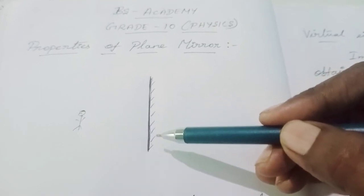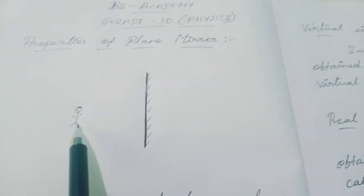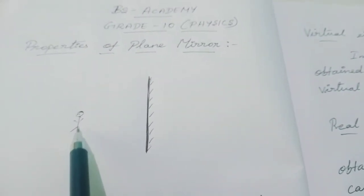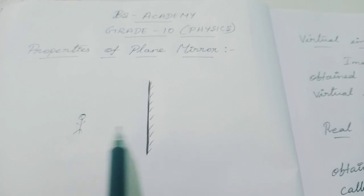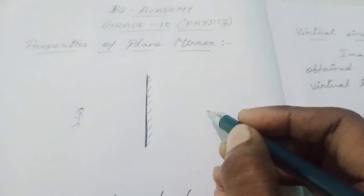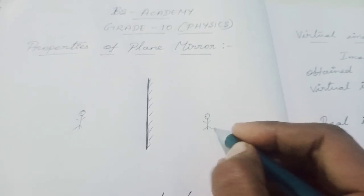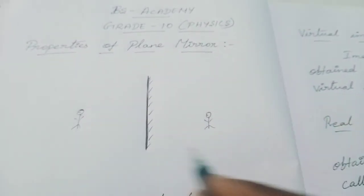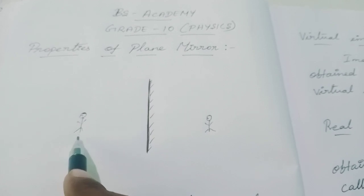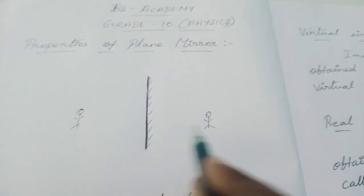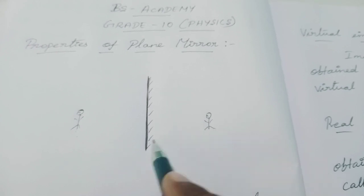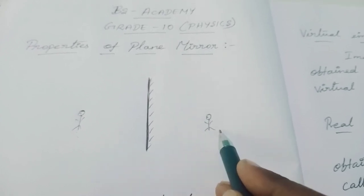The object should always be placed in front of the polished surface. Imagine a person standing in front of the plane mirror — this person can see their image through the mirror. The image of this person is formed behind the mirror. So the image is formed behind the mirror in the case of a plane mirror.